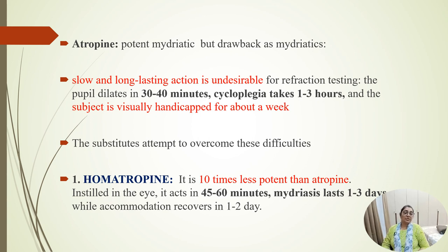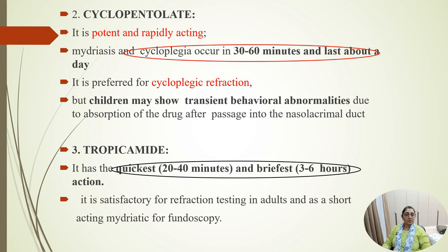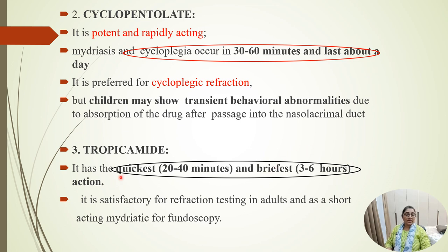Homatropine is 10 times less potent than atropine; when instilled in the eye, it acts within 45 to 60 minutes, mydriasis lasts 1 to 3 days, and accommodation recovery occurs within 1 to 2 days. Cyclopentolate is another substitute — potent and rapidly acting, with mydriasis and cycloplegia occurring in 30 to 60 minutes and lasting about a day; it is preferred for cycloplegic refraction, especially in children, though transient behavioral abnormalities can occur due to absorption through the nasal lacrimal duct. Tropicamide is the quickest, acting in 20 to 40 minutes with briefest action of 3 to 6 hours; it is used for refraction testing in adults and as a short-acting mydriatic for fundoscopy.